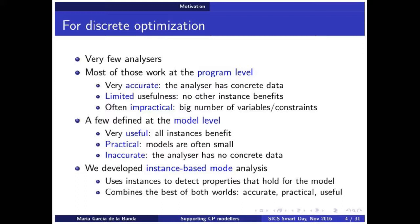Now, this is great because if you find something, if you find a property, then you can use that property to be useful for any instance, for any data that you can have on that model, which is great. It also could be quite practical because models tend to be rather small. So you're going to finish quite soon. But they tend to be quite inaccurate because you don't have the data. So you might not be able to infer the property that you wanted to infer.